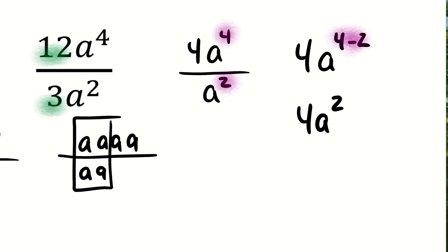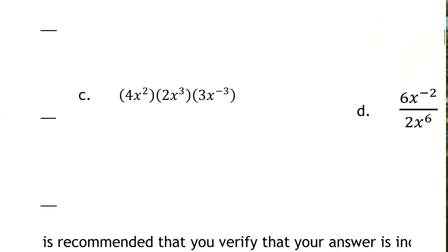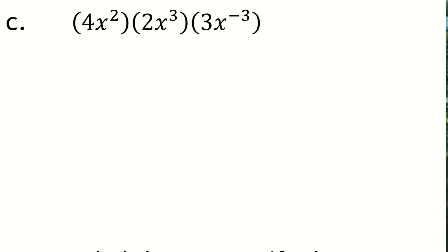Let's move along to part C. So in C, I see three groups of factors that have numerical coefficients. If I look at the numerical coefficients, there is a 4 at the very lead here, a 2 and a 3. And if I multiply those, 4 times 2 is 8, and 8 times 3 is 24.